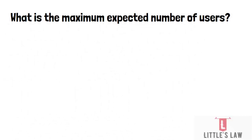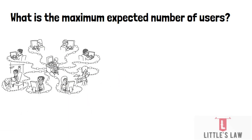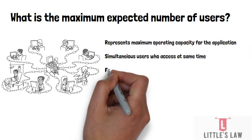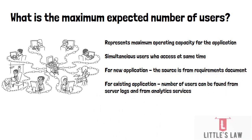The maximum expected number of users logged into your application represents the maximum operating capacity. Simultaneous users are those with active connections to the same website at the same time. For a new application, this number may come from requirements documents based on predicted usage from the marketing or analytics department. For existing applications, we can identify simultaneous users by analyzing server logs and analytics service data.